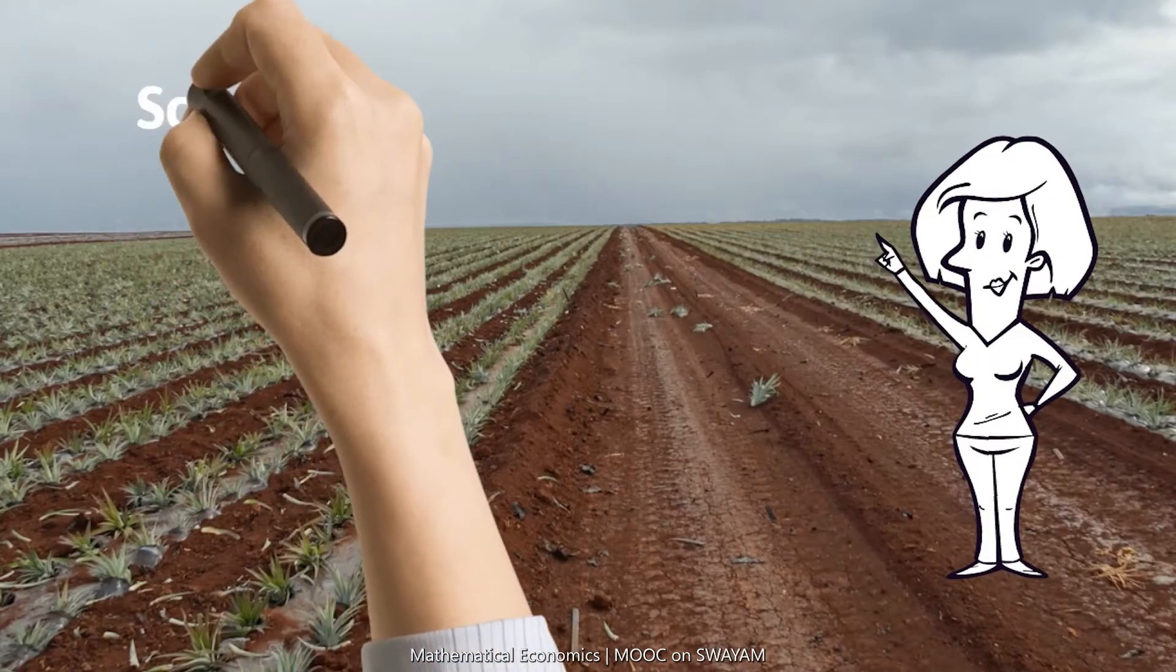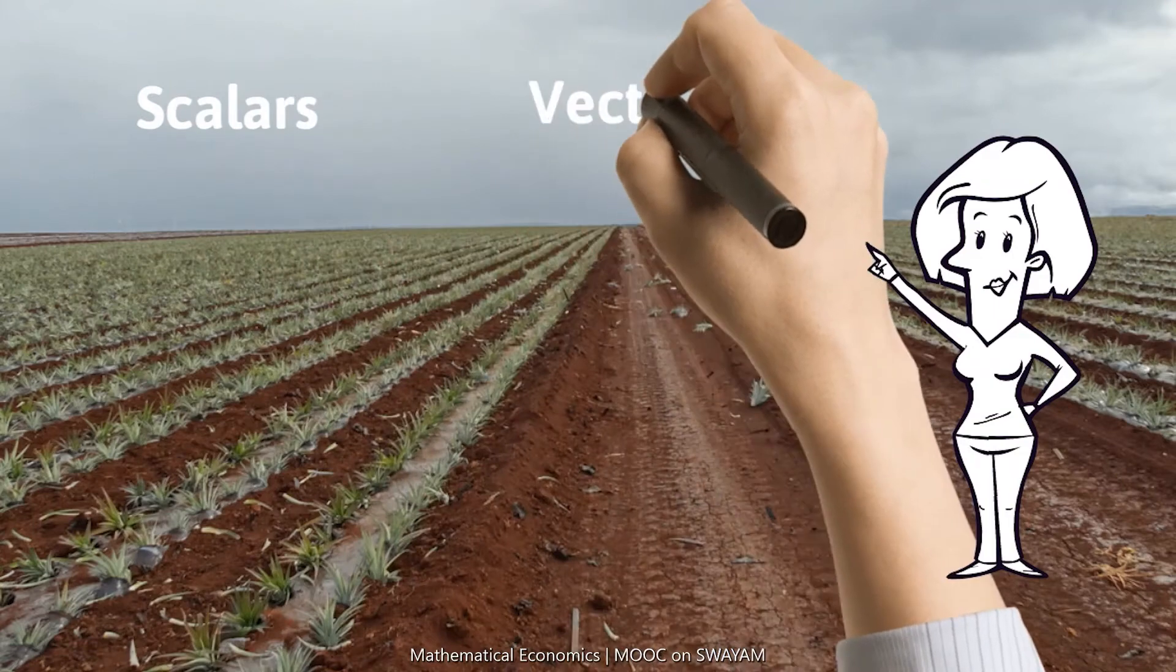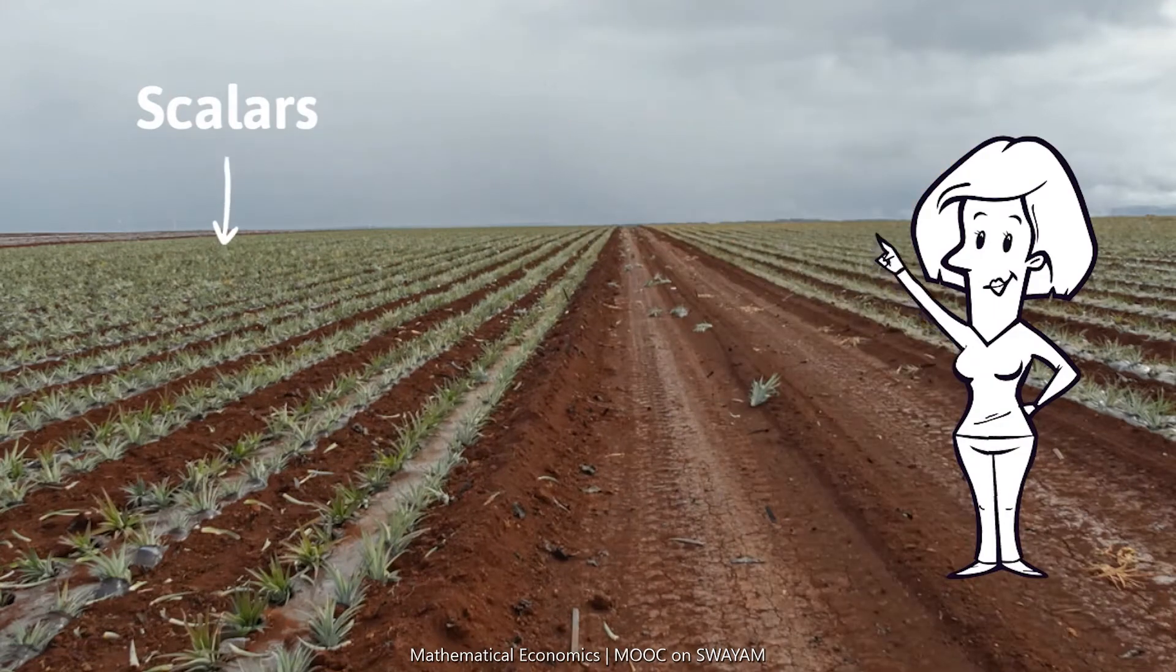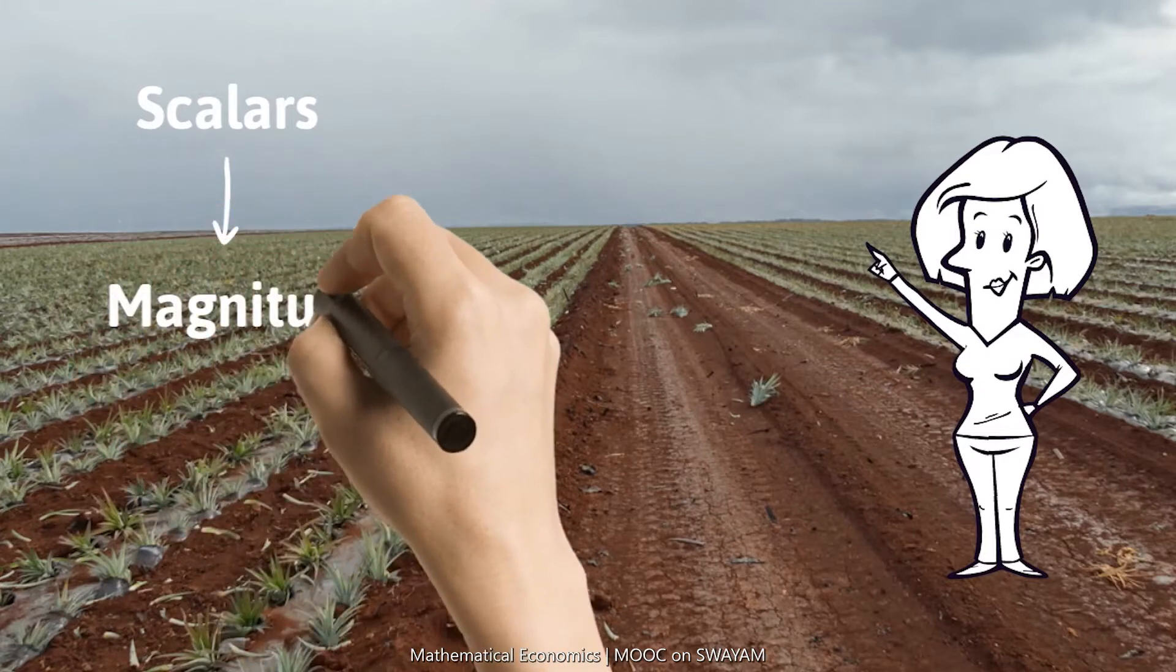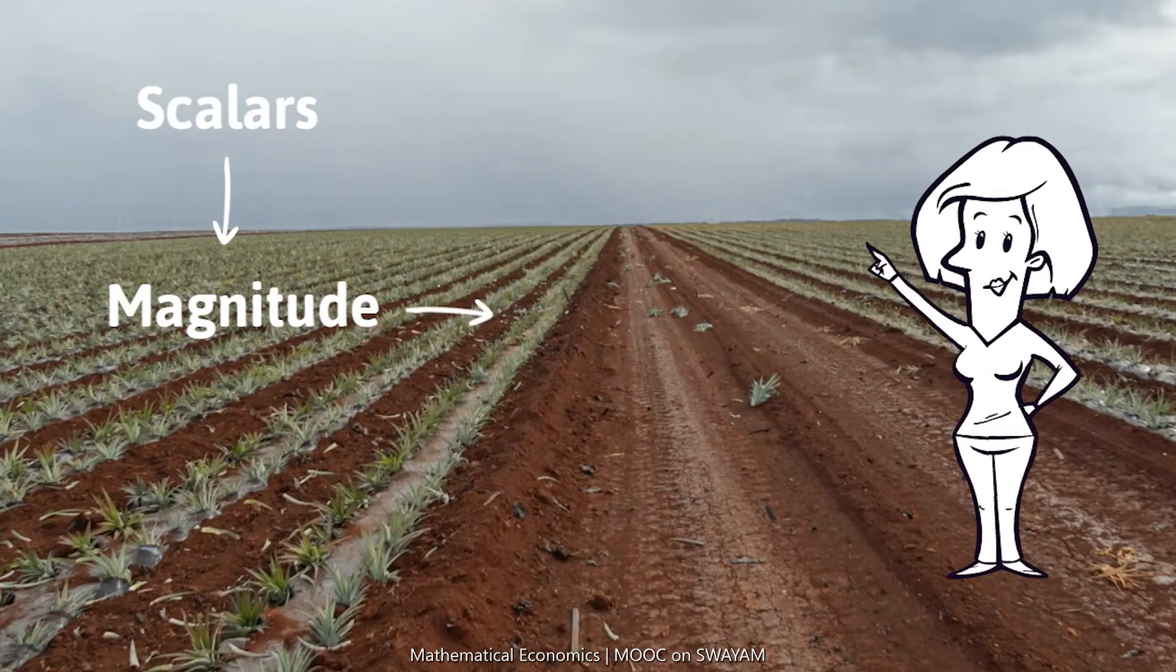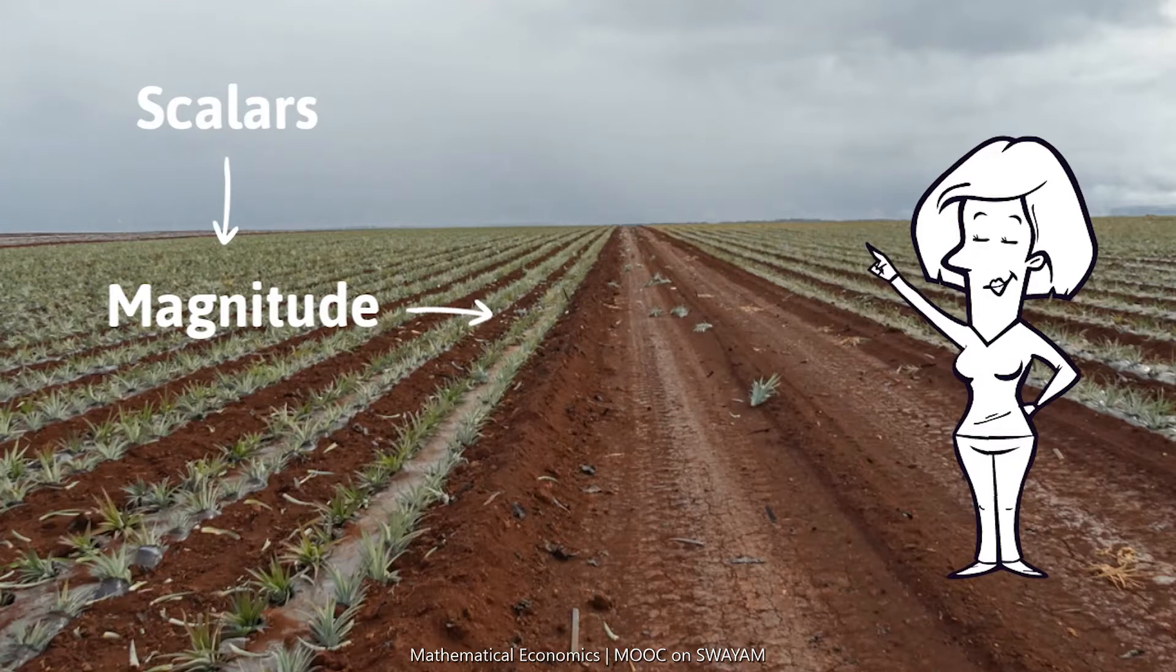In matrix algebra, you will come across two concepts: scalars and vectors. A scalar is a quantity that has magnitude. It represents the size or the amount, such as what is the length of this field. The answer will be in terms of some real number. Say for example, this field is 1 km long. The magnitude is 1 km and 1 is a real number.